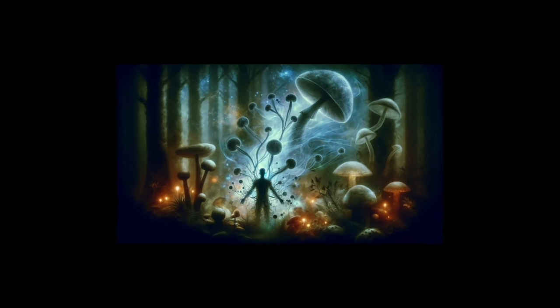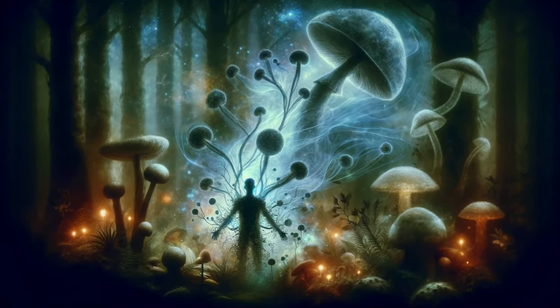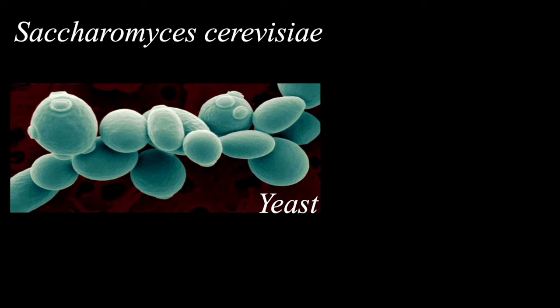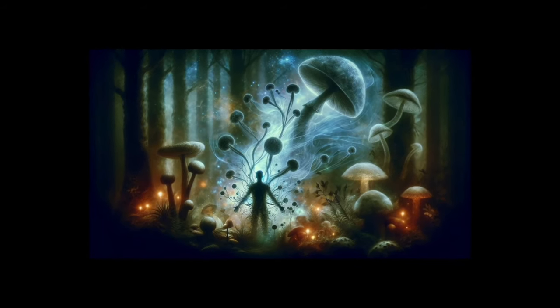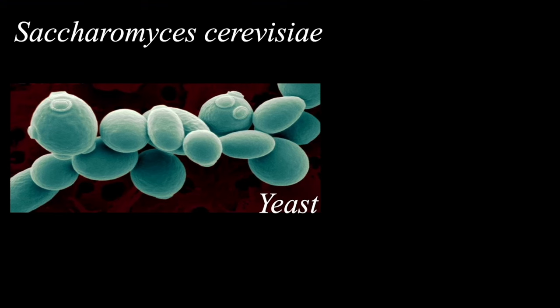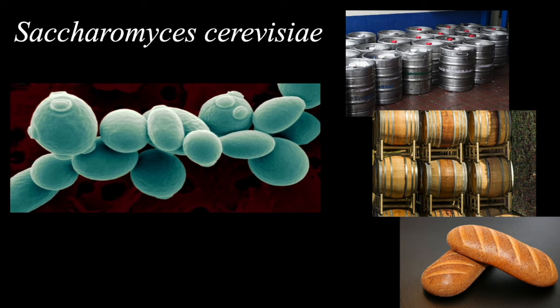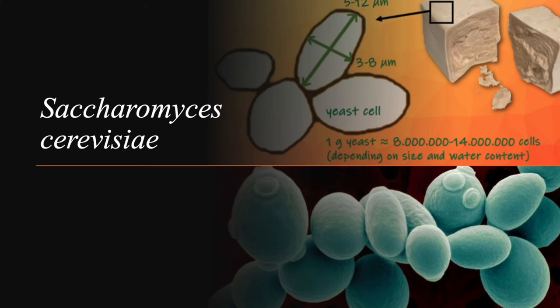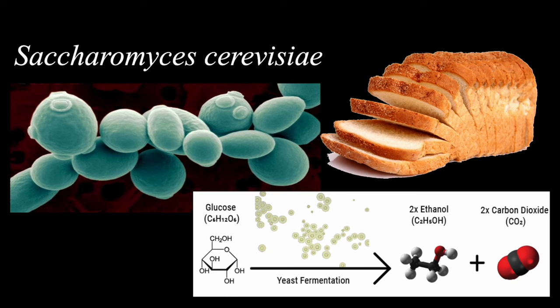Our relationship with fungi is complex. Their products are in our food, our medicine, and they even live on us and within us. Some, like the yeast Saccharomyces cerevisiae, help us make beer, wine, and bread. Think of yeast like tiny little workers — one gram of yeast is approximately equal to 8 to 14 million cells. Yeast can turn simple ingredients like glucose into delicious bread.